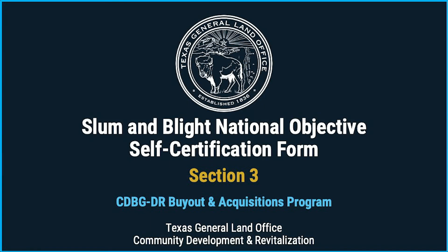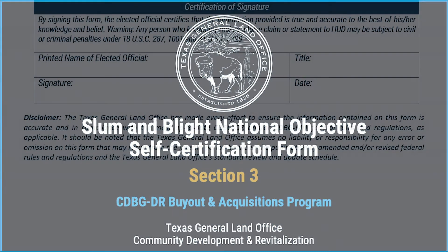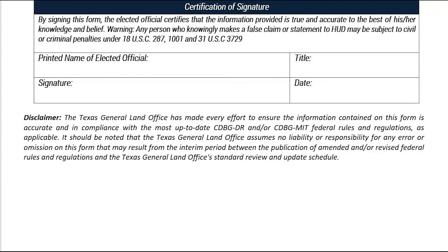Section 3, the final section of the form, is the Certification of Signature. This section requests the signature of an elected official of the subrecipient. The certification states: by signing this form, the elected official certifies that the information provided is true and accurate to the best of his or her knowledge and belief. Any person who knowingly makes a false claim or statement to HUD may be subject to civil or criminal penalties under 18 U.S.C. 287-1001 and 31 U.S.C. 3729. In this scenario, we are using Sonya Jenkins as the county judge. With her signature, she is attesting that this is the current situation of the area and that the county is in need of this funding to protect the town and prevent future damage and health and safety risks. The elected official will print their name, title, and sign the form.